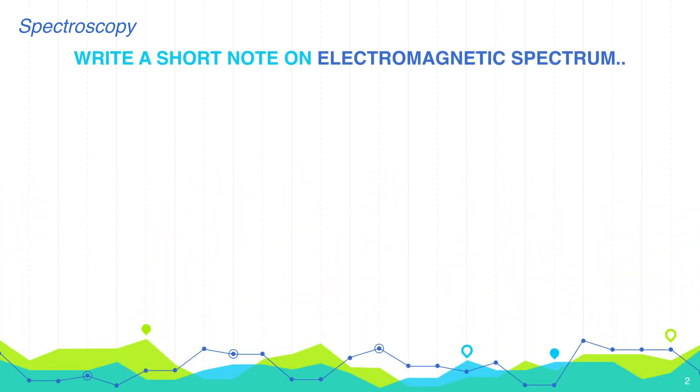So the first question is, write a short note on electromagnetic spectrum. This question can come in exam as a short question or a long question also.